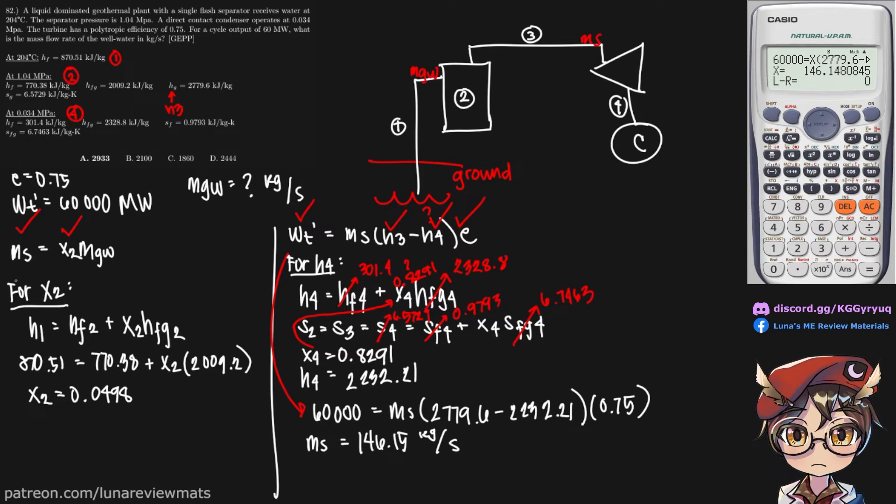So now that we have this, we can now solve for our ground water mass flow rate. So again, this is just direct substitution. And we get a ground water mass flow rate of 2,933 because that's the one in the choices. Kilograms per second. And that is our final answer.